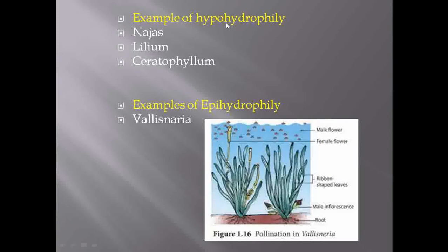Examples of hypohydrophily include Najas, Lilium, and Ceratophyllum. If you observe this image, you can see the male and female flowers of Vallisneria — the male flowers travel towards the female flower above the water. That's why this type of pollination is called epihydrophily.